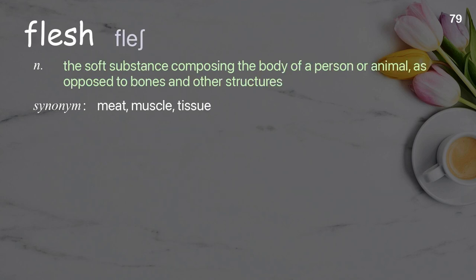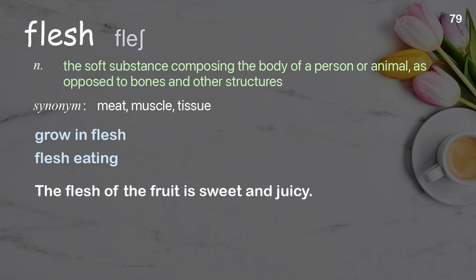Flesh: the soft substance composing the body of a person or animal, as opposed to bones and other structures. Examples: grow in flesh, flesh eating. The flesh of the fruit is sweet and juicy.